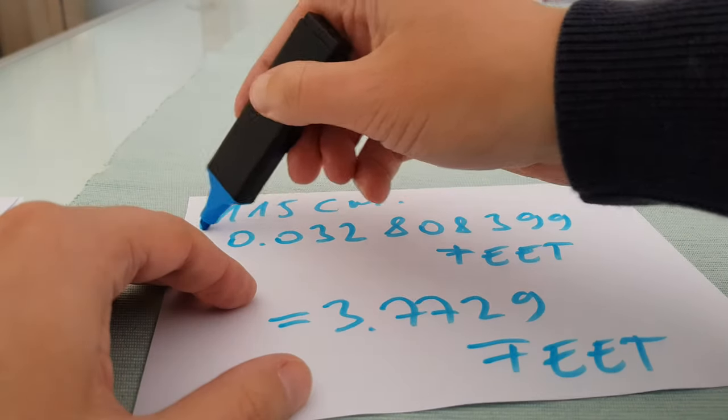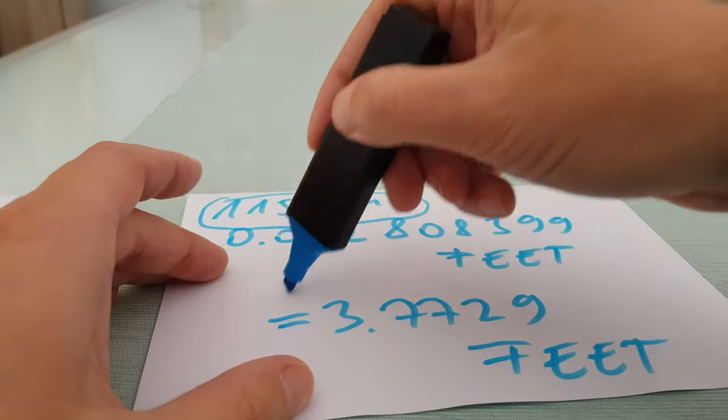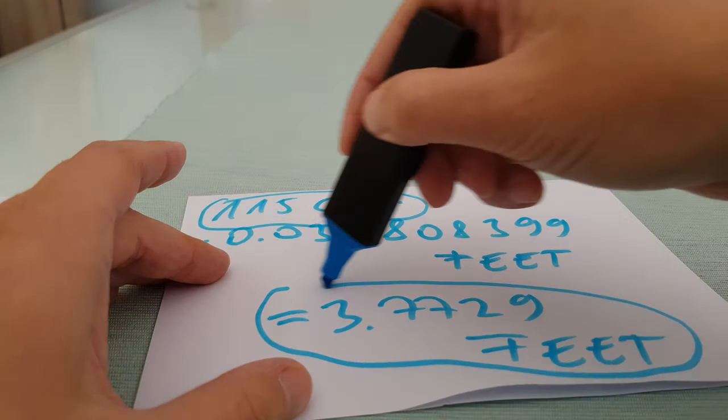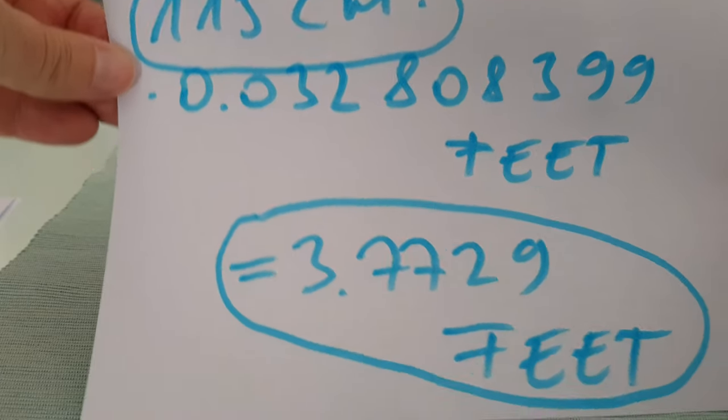Here is the solution again: 115 cm equals 3.7729 feet.